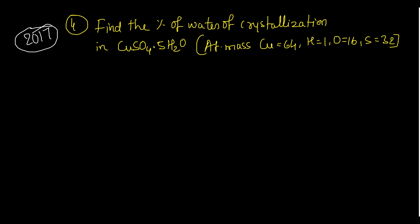This question was asked in 2017: find the percentage of water of crystallization in copper sulfate pentahydrate — atomic masses are given. Pause the video and try it yourself. The answer: percentage of water = 36%.